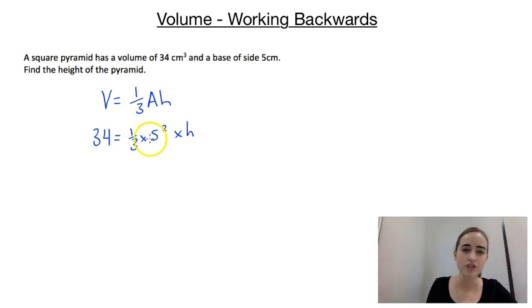Now again, there's two ways you can write this. One is to divide both sides by this whole section here. So we could write it as 34 over 1/3 times 5² equals h.